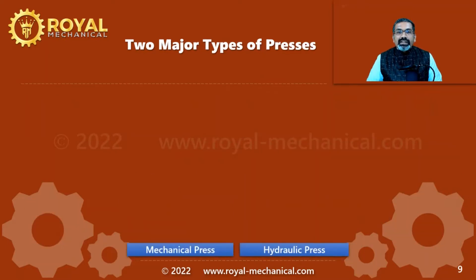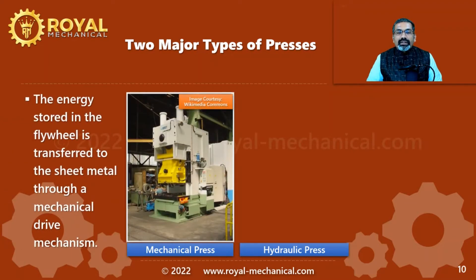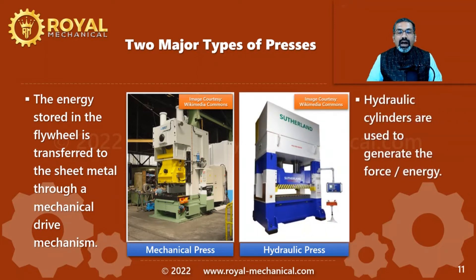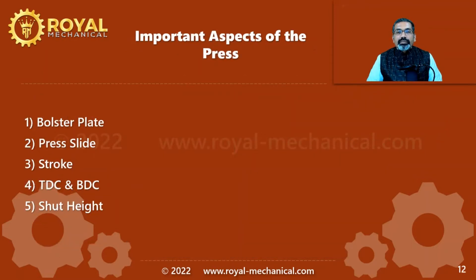The manufacturing industry uses a wide variety of presses, but for the application of press tools or stamping dies, the industry usually uses a mechanical press or a hydraulic press. In a mechanical press, the energy stored in the flywheel is transferred to the sheet metal component using a mechanical drive mechanism, whereas in a hydraulic press, hydraulic cylinders are used to generate the force or energy.